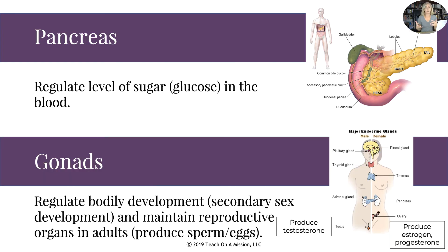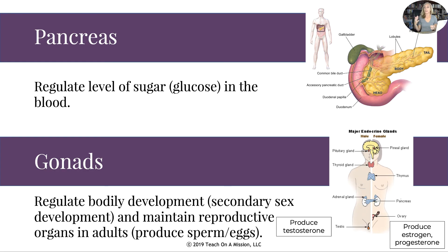And then we have the gonads — the awkward part we have to talk about, but they're part of the endocrine system. Have you ever heard 'your body's just rushing with hormones'? Think of a woman's menstrual cycle, puberty — it's actually accurate. These are the hormones that last over weeks, months, years of your life, especially in the peak of your reproductive phases. They regulate secondary sexual development — meaning things that make you a woman or a man but are not your reproductive organs — such as breasts or broad shoulders in men — and they also maintain reproductive organs, producing sperm in men and eggs in women.